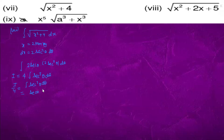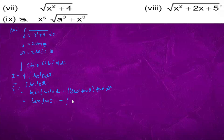We take secθ and integrate sec²θ dθ, giving secθ tanθ minus the integral of secθ tan²θ dθ. Since tan²θ = sec²θ − 1, this becomes secθ tanθ minus ∫sec³θ dθ plus ∫secθ dθ.